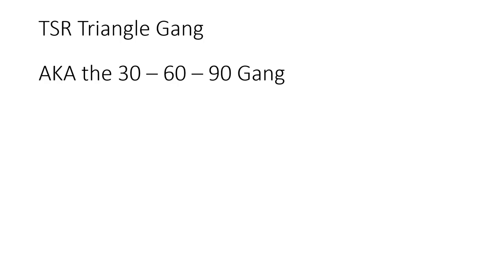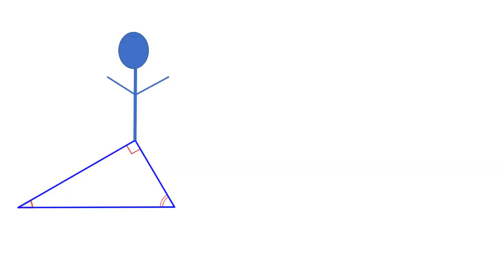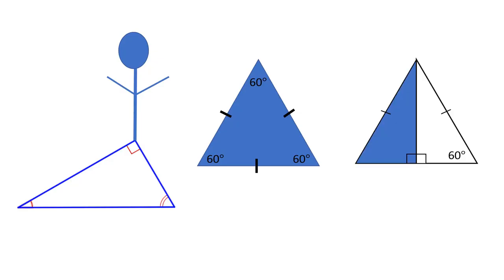Members of this group are hard to miss. They limp. They have a short leg and a long leg. They truly are a splinter group. They are related to equilateral triangles. If an equilateral triangle is split down the middle, two triangles from the 30-60-90 gang are formed.